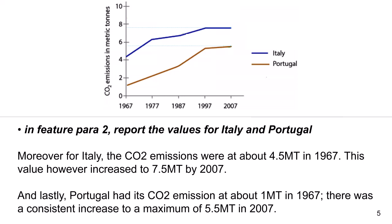In feature para 2, report the values for Italy and Portugal. Moreover, for Italy, the CO2 emissions were at about 4.5 metric tons in 1967. This value however increased to 7.5 metric tons by 2007. And lastly, Portugal had its CO2 emissions at about 1 metric ton in 1967, and there was a consistent increase to a maximum of 5.5 metric tons in 2007.